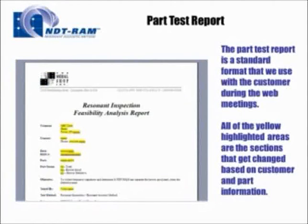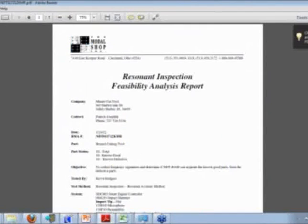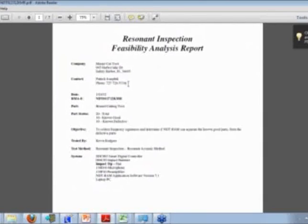We have a standard part test report format that we review with each customer on each web meeting or visit. We've made it simple so that only the areas highlighted in yellow need to be changed for each customer. This saves a lot of time — that way you're not repeating the same typing and entering the same information over and over again. All you do is fill out the customer information, the RMA number, the type of part, and the number of parts. All the rest is already filled in.